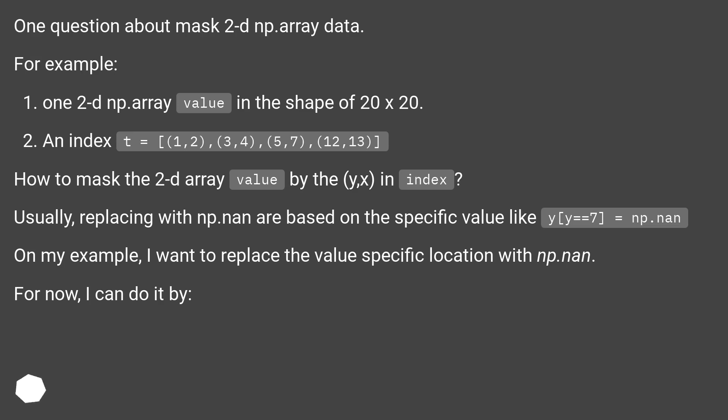One 2d np.array value in the shape of 20 by 20, an index t equals 1,2,3,4,5,7,12,13. How to mask the 2d array value by the y, x and index?